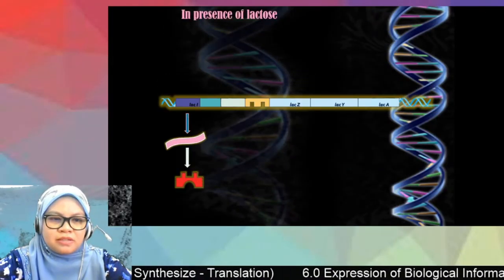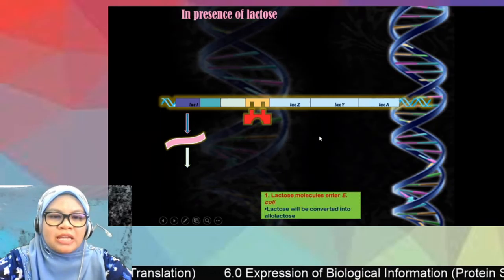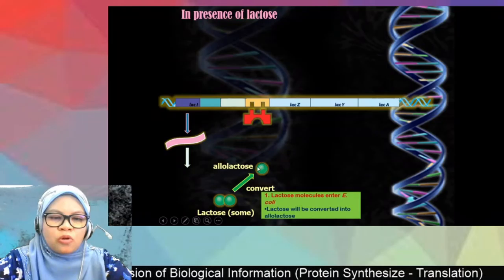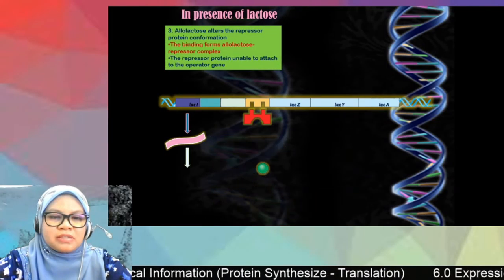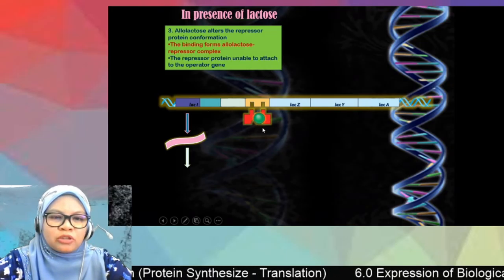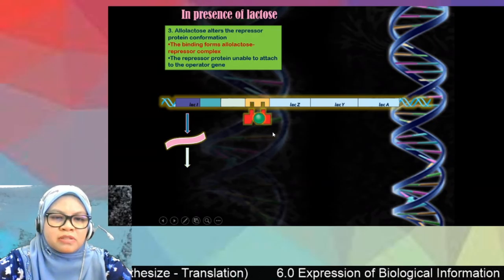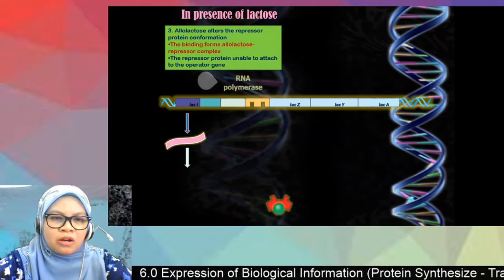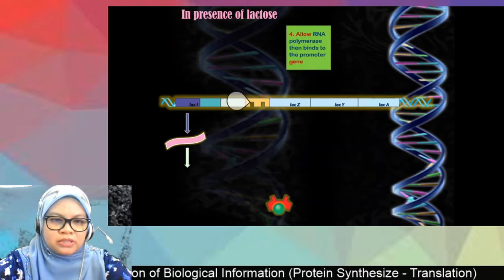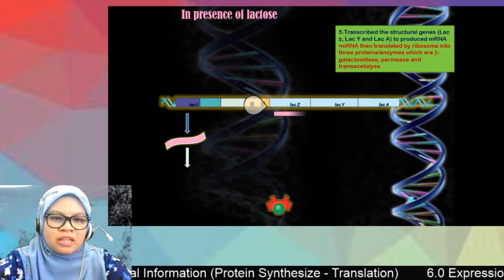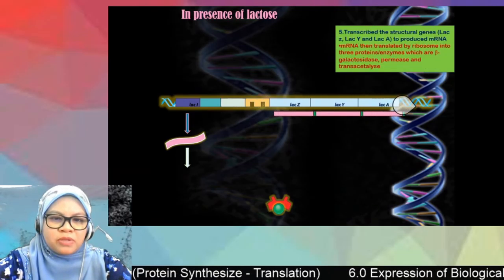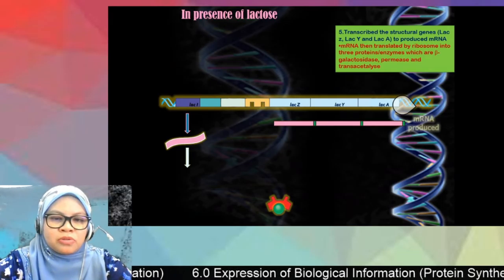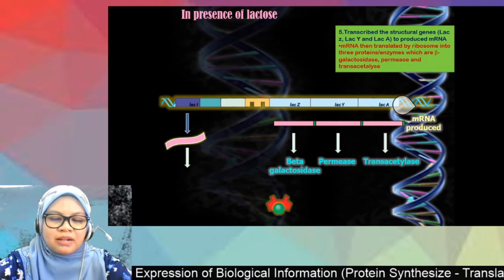When lactose is present, lactose is converted to allolactose, and allolactose binds to the repressor protein. The binding of allolactose causes a conformational change in the repressor protein, so it detaches from the operator. This allows RNA polymerase to bind to the promoter and start transcription of lacZ, lacY, and lacA. The mRNA produced undergoes translation, producing beta-galactosidase, permease, and transacetylase.